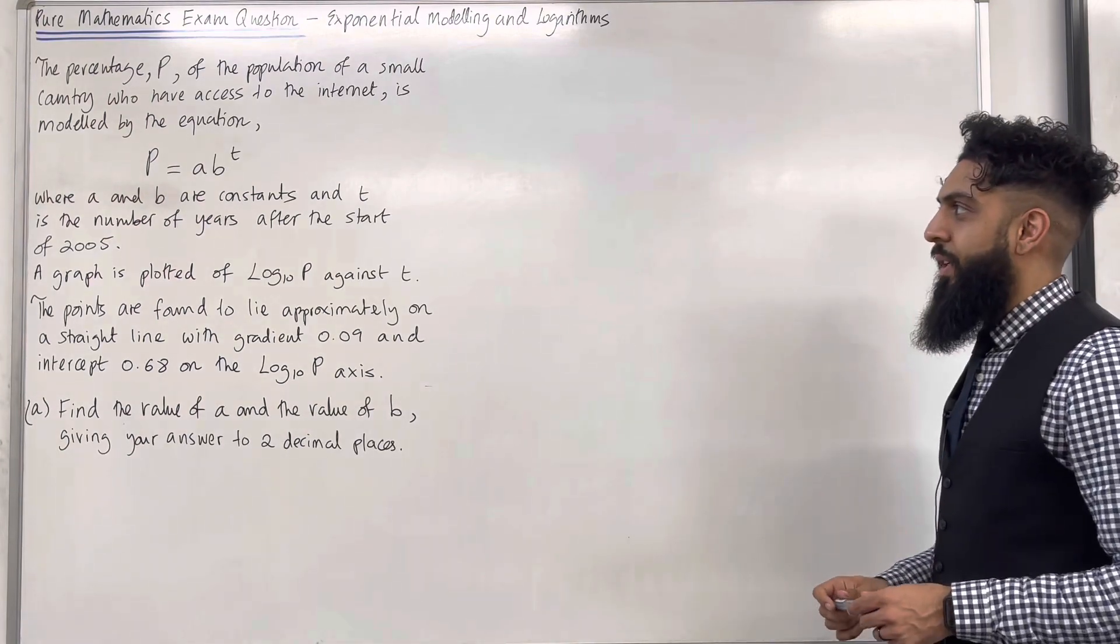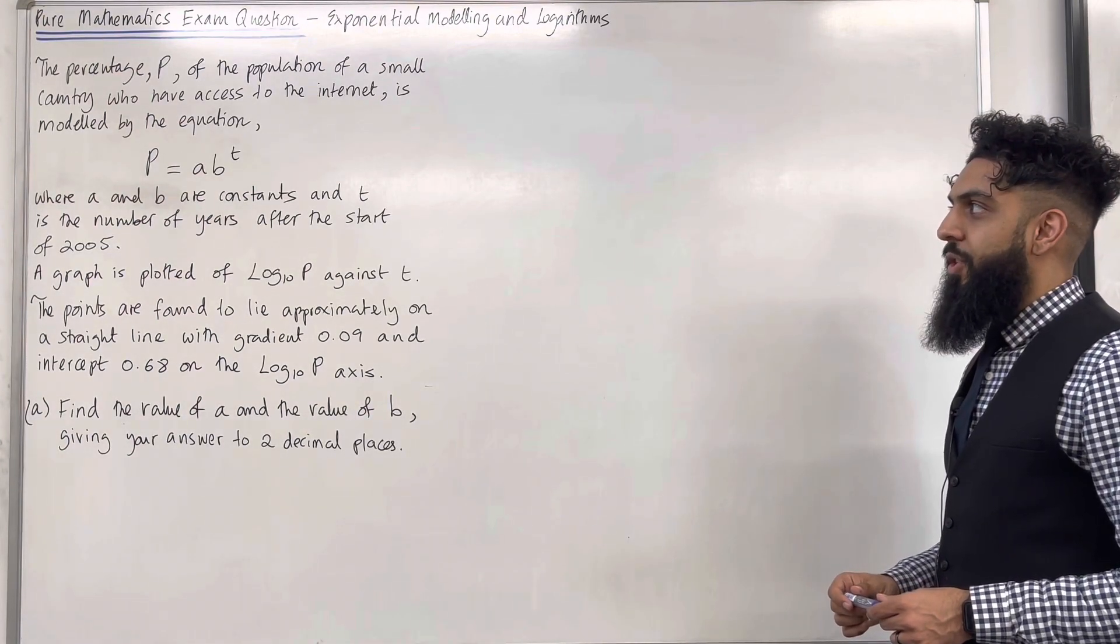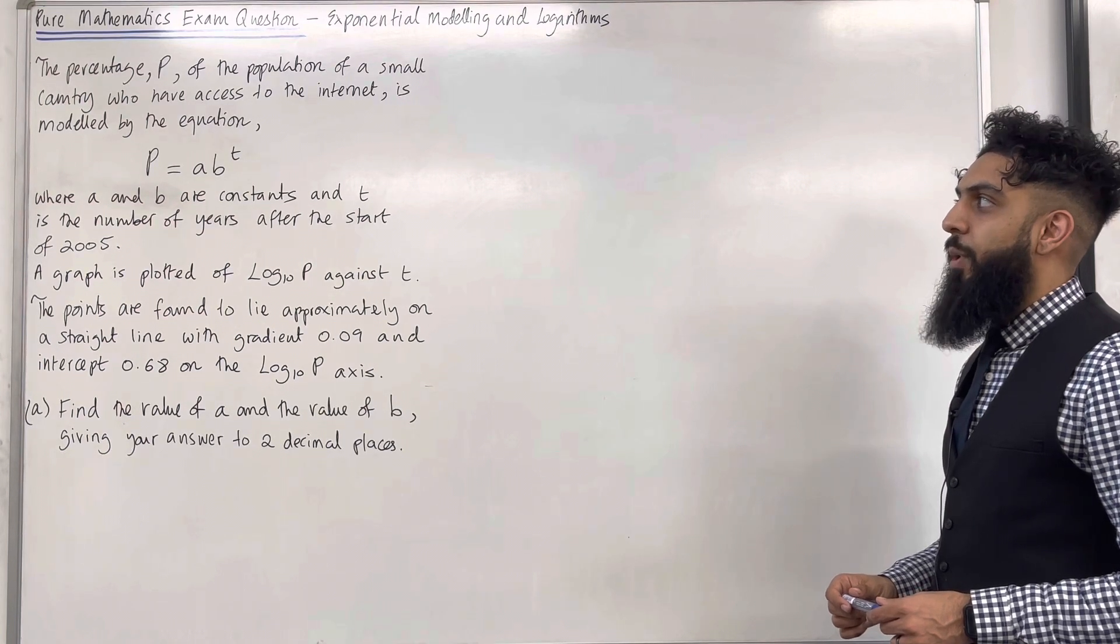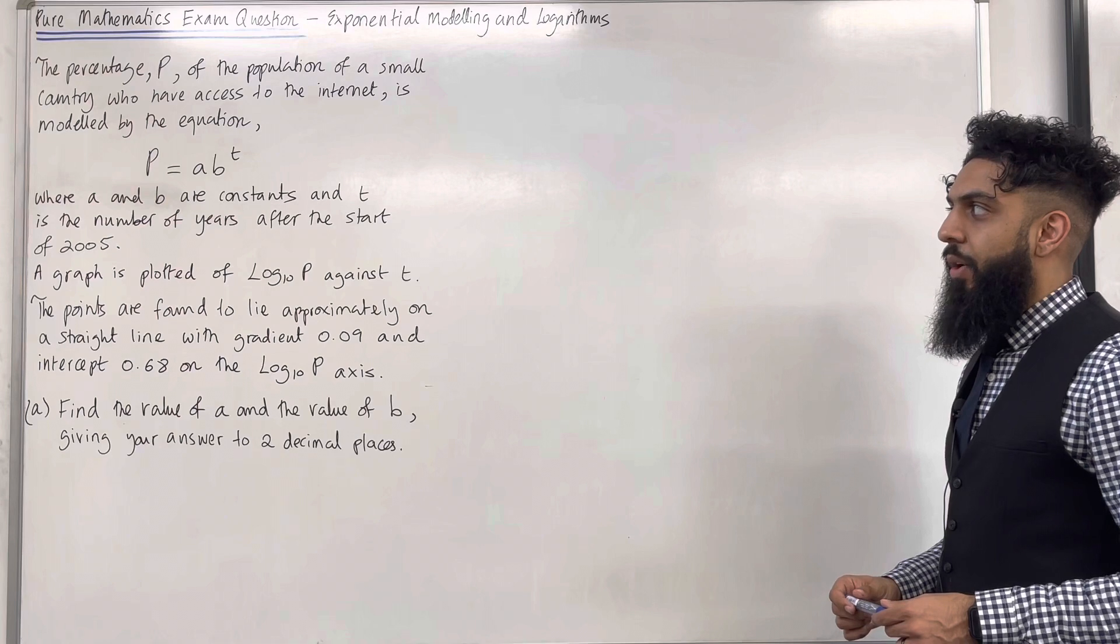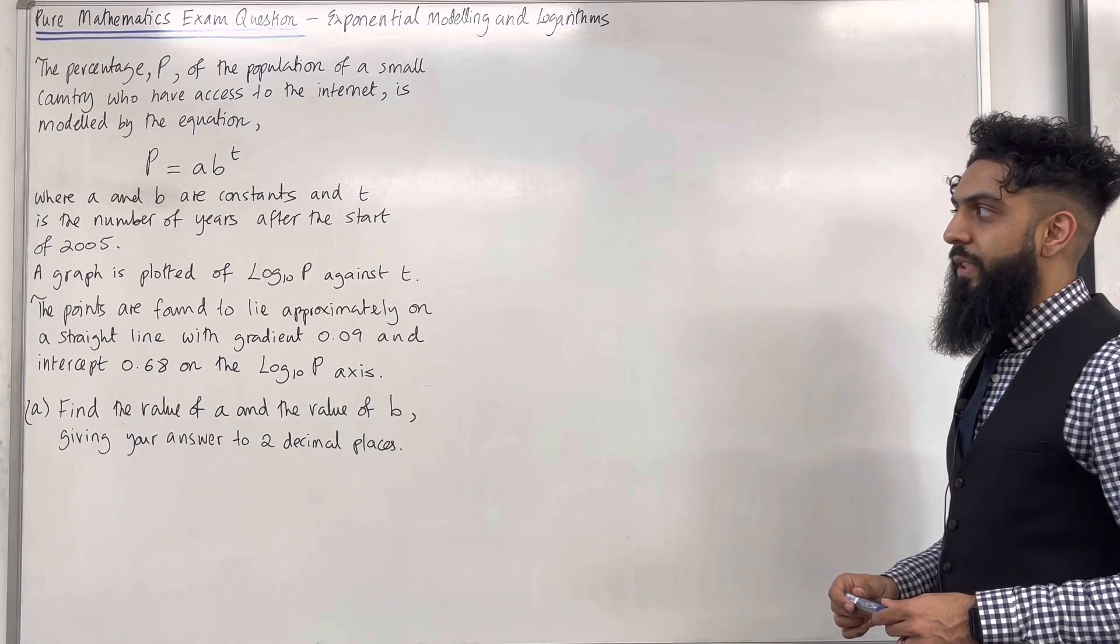Here is the exam question. The percentage P of the population of a small country who have access to the internet is modelled by the equation P equals AB to the power T, where A and B are constants and T is the number of years after the start of 2005.